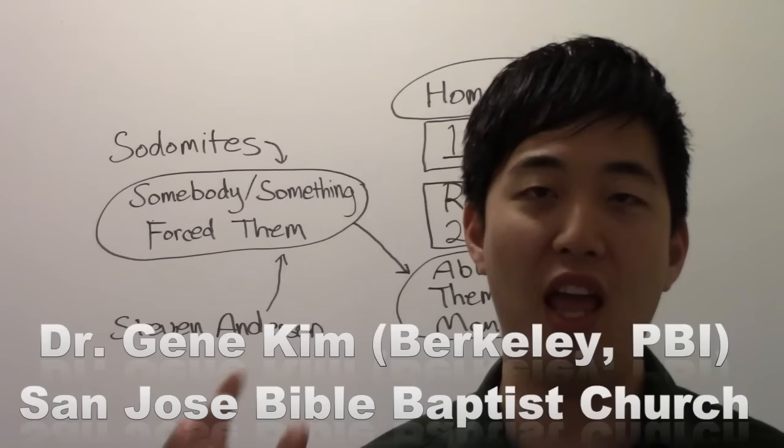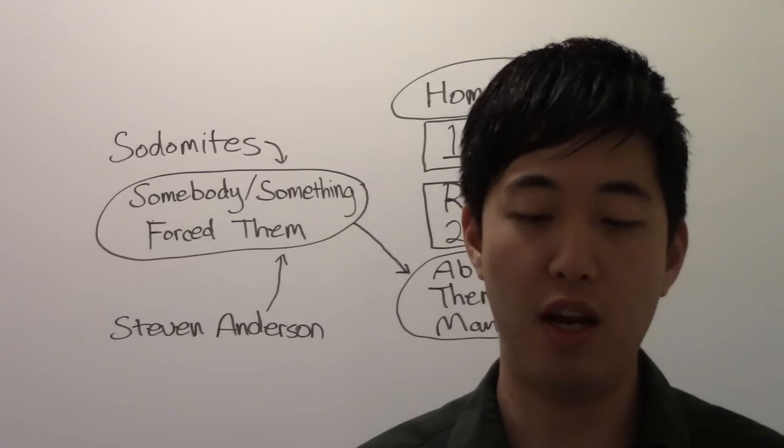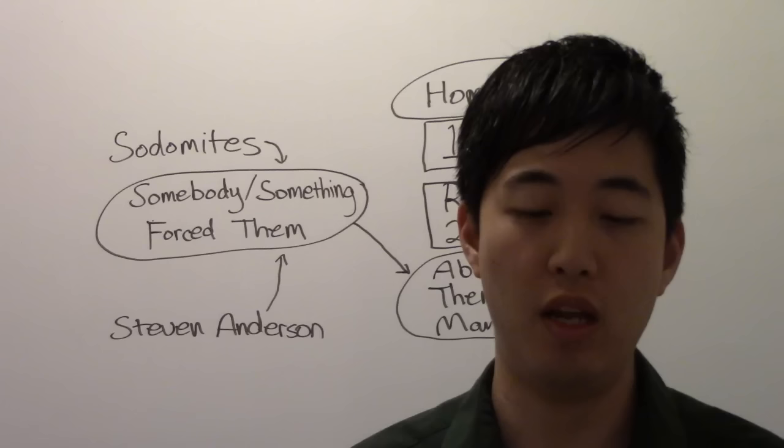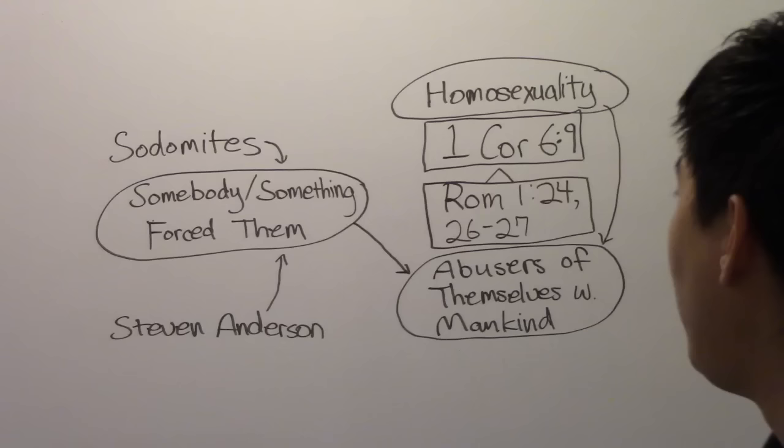In 1 Corinthians chapter 6 verse 9: Know ye not that the unrighteous shall not inherit the kingdom of God? Be not deceived, neither fornicators, nor idolaters, nor adulterers, nor effeminate, nor abusers of themselves with mankind. Now this passage has been used by Bible-believing Christians to preach against homosexuality.